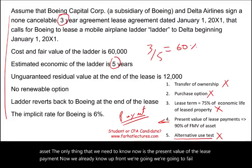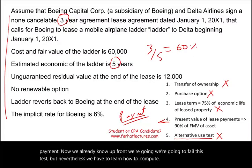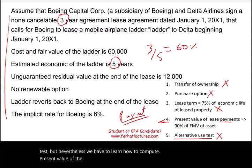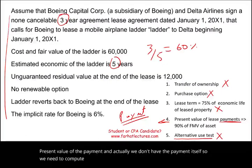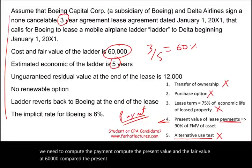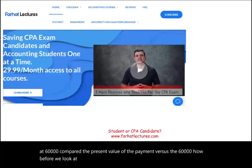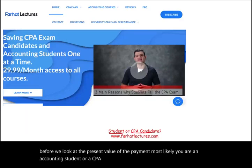We already know upfront we're going to fail this test, but we still need to learn how to compute the payment, then the present value, and compare it to the fair value of $60,000.